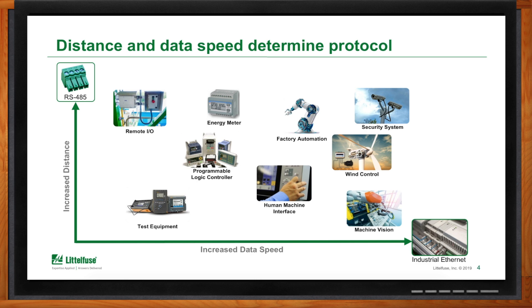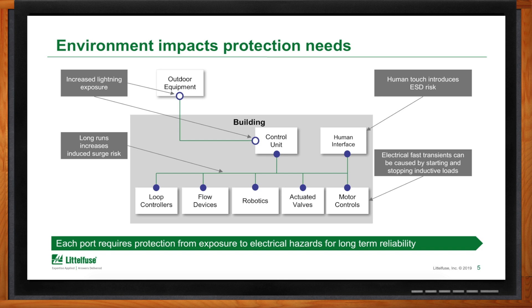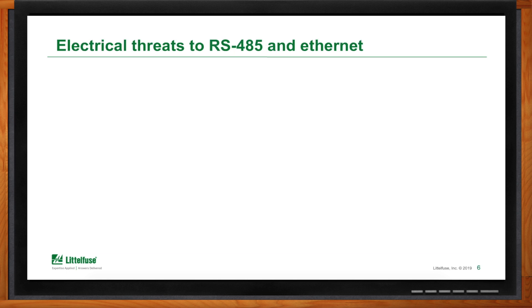Location is critical to port protection. If you have a line outside, you need to be aware of lightning — both where the outdoor port connection is and where it runs inside a building. Long runs require concern about inductive surge risk, and wherever a human may touch something you need to be concerned about electrostatic discharge. Also, wherever motors stop and start, that can cause electrical fast transients.